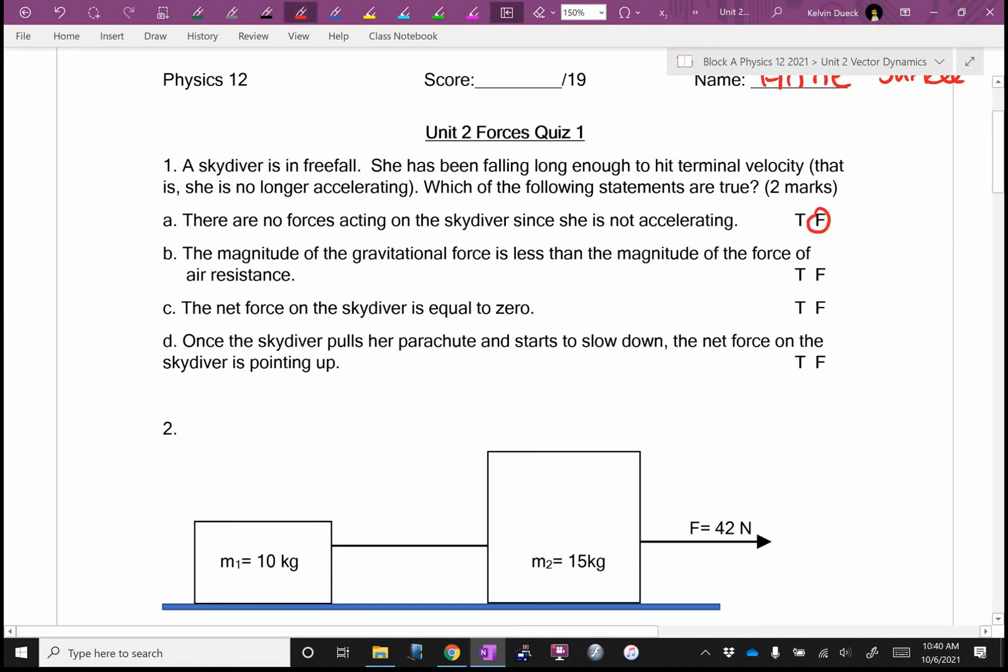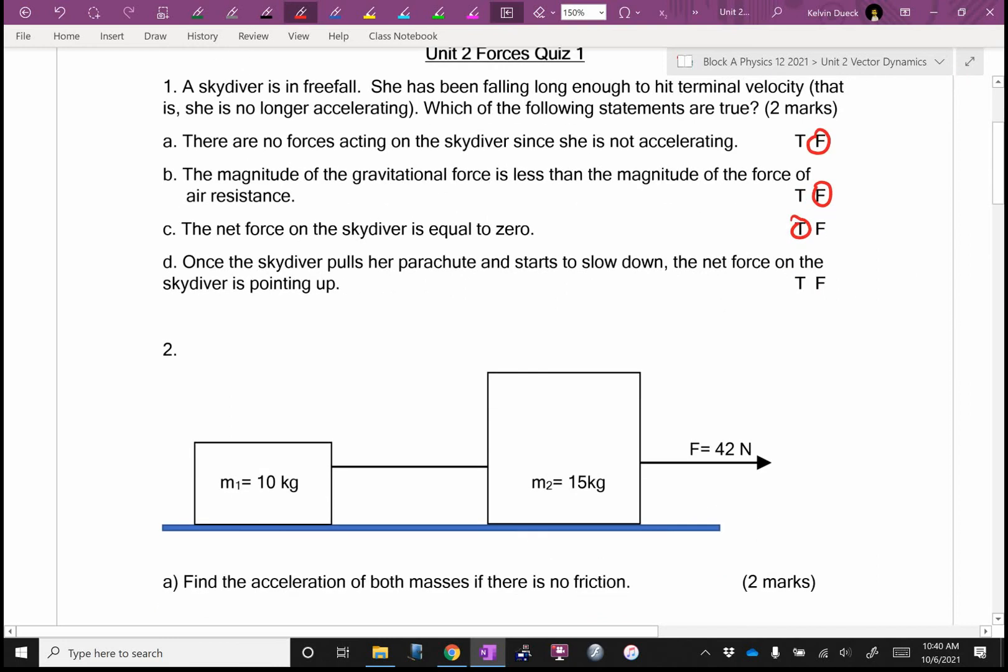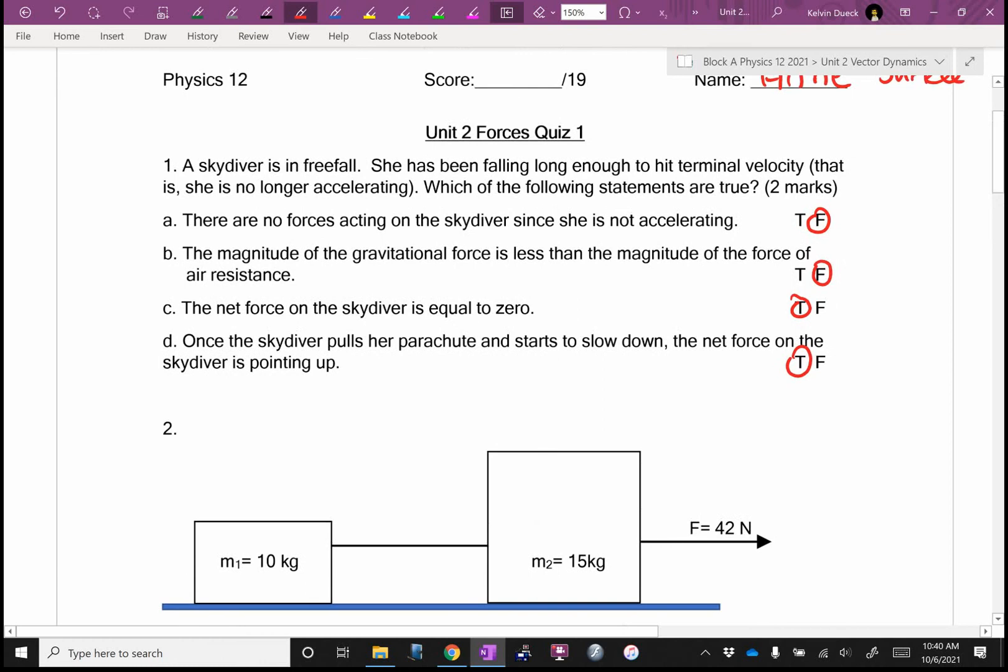The magnitude of the gravitational force is less than the magnitude of the force of air resistance. The net force on the skydiver is equal to zero. Once the skydiver pulls her parachute and starts to slow down, the net force on the skydiver is pointing up. So half mark for each of those for a total of two marks. So this question out of two.